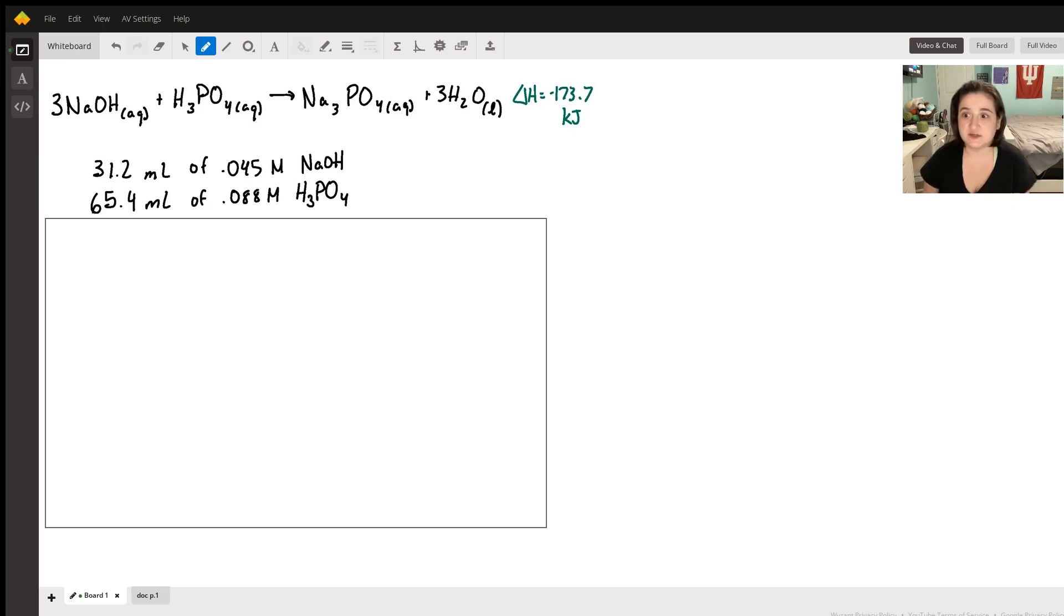You said we have 31.2 milliliters of 0.45 molar sodium hydroxide and 65.4 milliliters of 0.88 molar phosphoric acid.